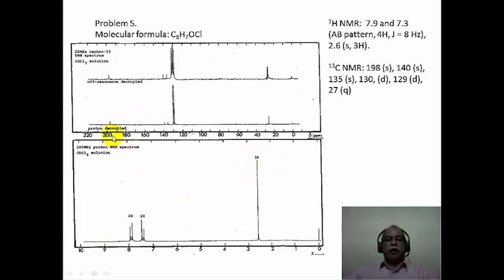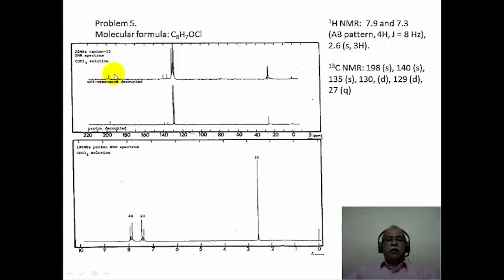Looking at the carbon-13 spectrum, around 200 ppm on the left-hand side there is a small singlet. The top trace is the off-resonance spectrum and the bottom trace is the normal broadband-decoupled spectrum. This signal remains as a singlet in the off-resonance spectrum, indicating this carbonyl group is not an aldehyde — if it were an aldehyde, the CH would split the carbon signal into a doublet. Since it remains a singlet, this is likely a ketone, consistent with a COCH3 group.